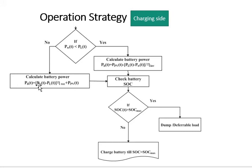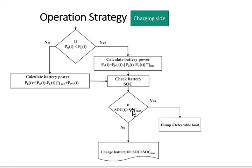P_L denotes load demand at any time and J_INV denotes the efficiency of the inverter. P_PV is the total power produced by solar PV panels, and P_W is the power produced by the wind turbine. If the total power from solar PV and wind turbines is sufficient and wind power is less than load, demand can be served by renewable sources only. After satisfying the load, surplus power is provided to the battery bank. If the battery bank power exceeds the maximum allowable capacity L_BMAX, excess energy can be dumped, given to deferrable loads in stand-alone mode, or supplied to the grid in grid-connected mode.